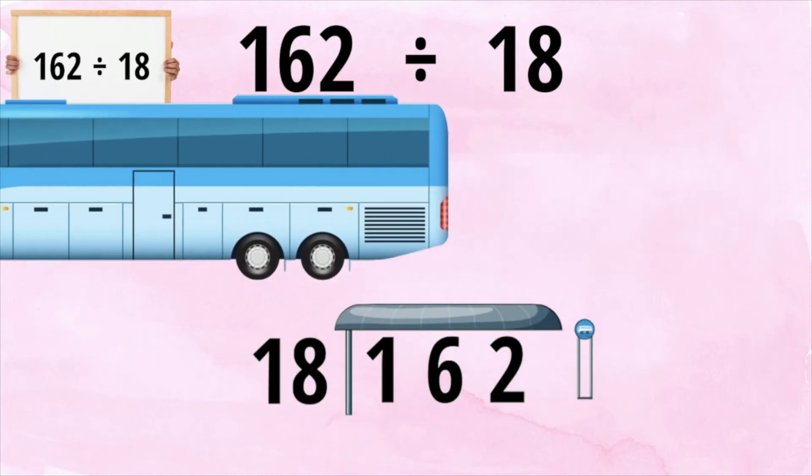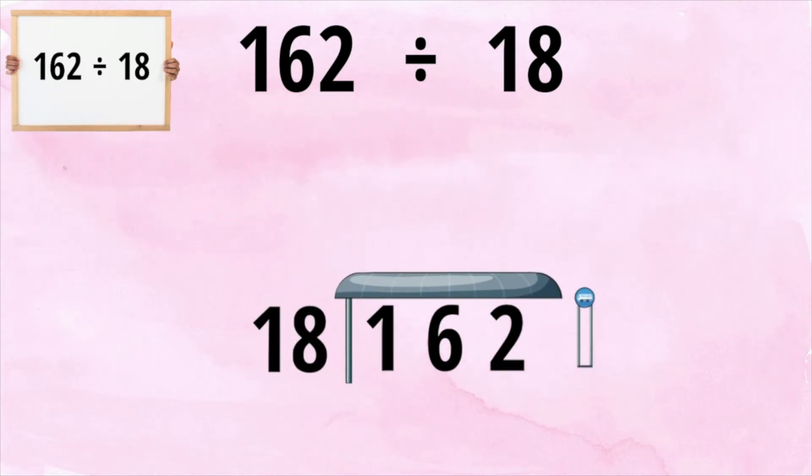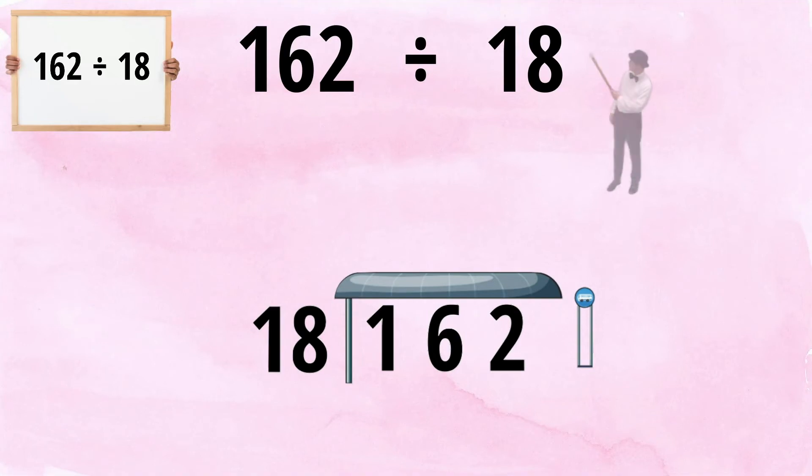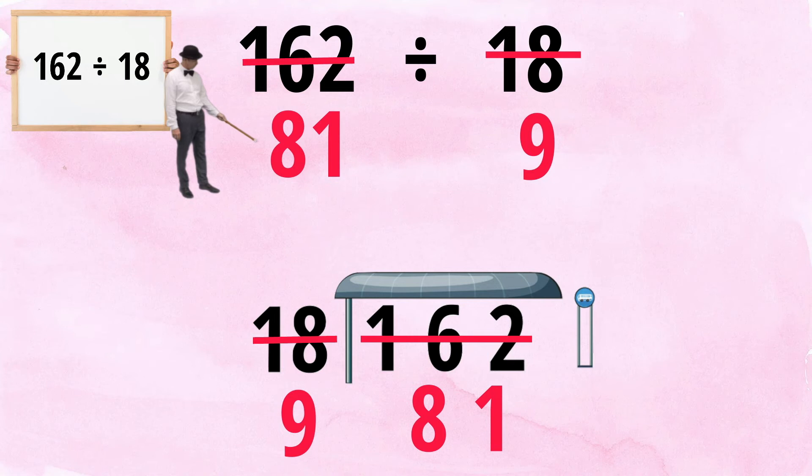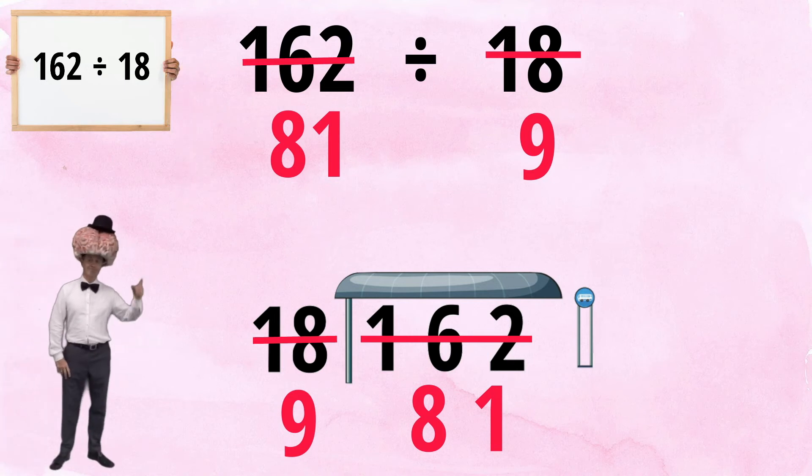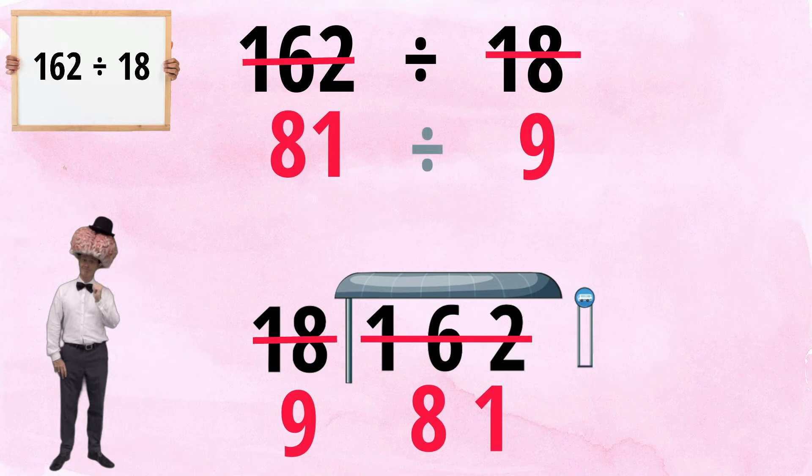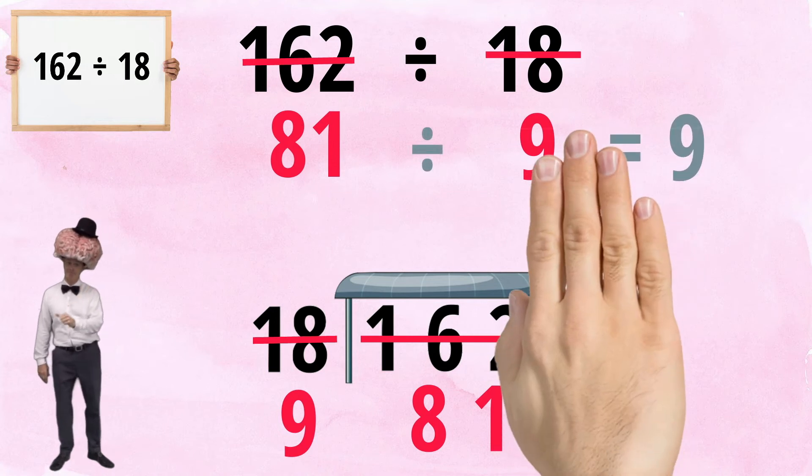Back to our tricky question. Let's begin by halving the divisor. Half of 18 is 9. Let's half the dividend. Half of 162 is 81. That looks a lot easier. 81 divided by 9 is 9.